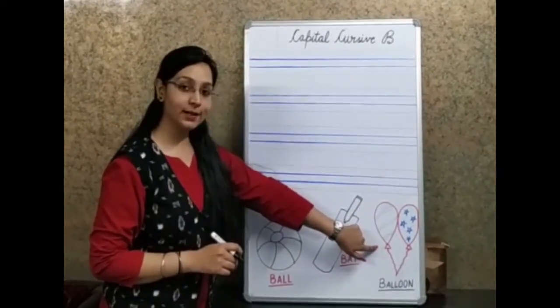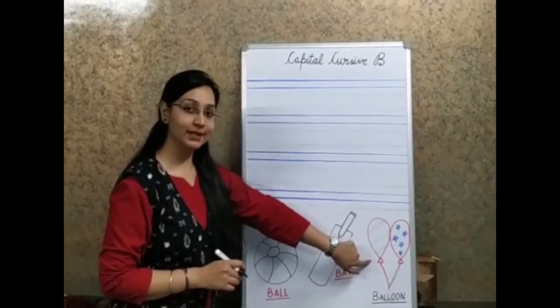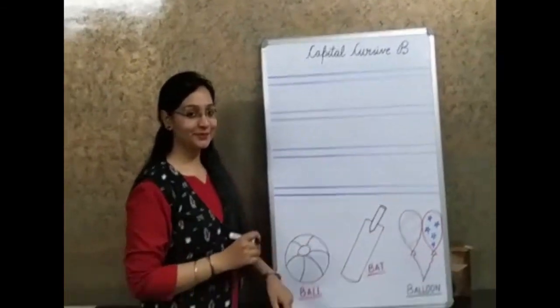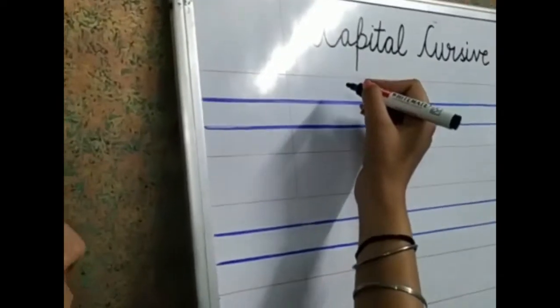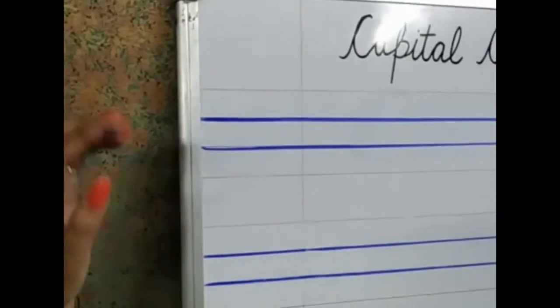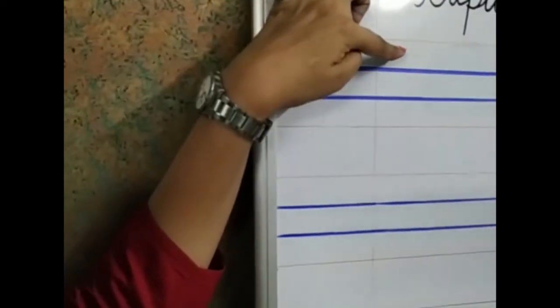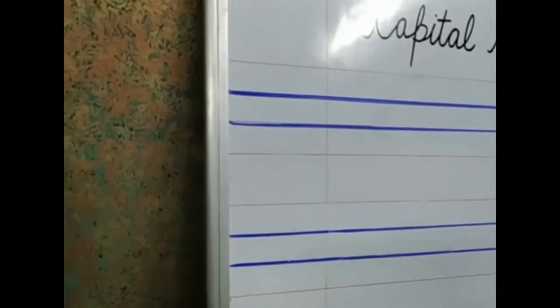Yes. So now, I am going to tell you how to write capital cursive B. Let's write. So children, like we wrote in those alphabets, in the notebook, there were four lines. Red, two blue lines and then again red line.